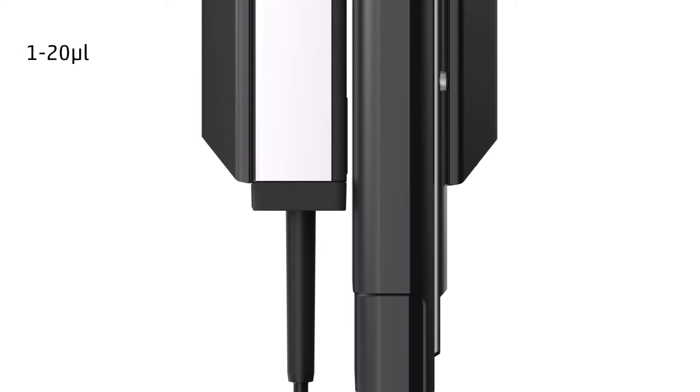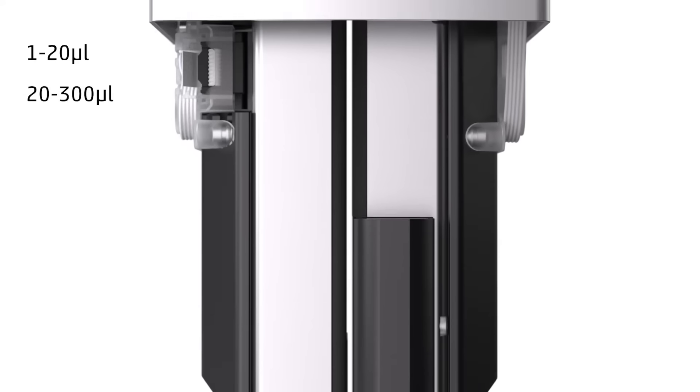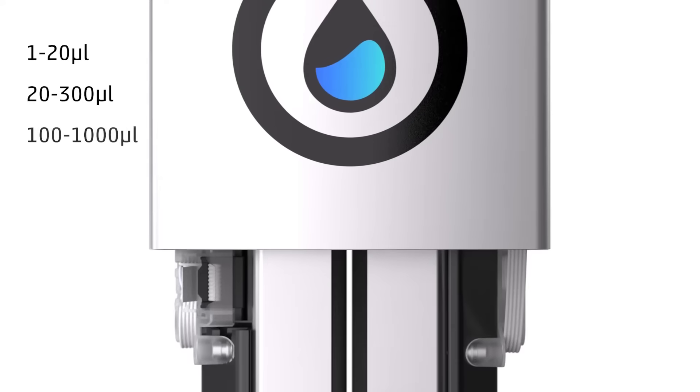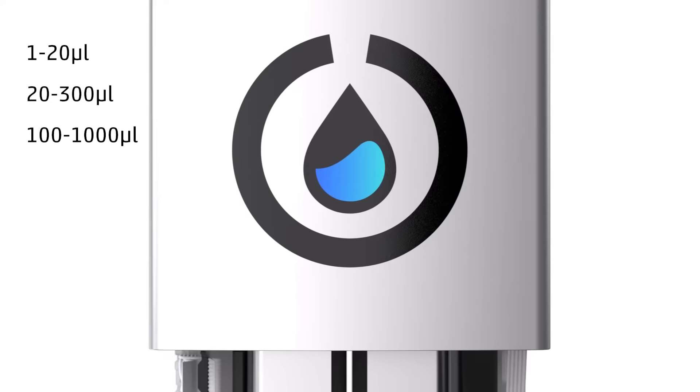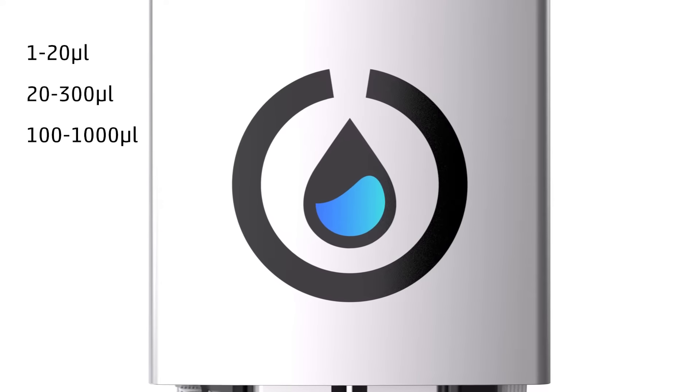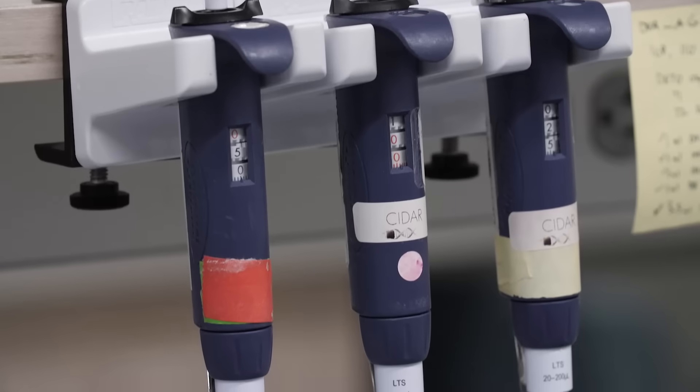Our pipettes are divided into three size ranges: 1 to 20 microliters, 20 to 300 microliters, and 100 to 1000 microliters in the single channel. These correspond to volume ranges you might be familiar with from manual pipettes.